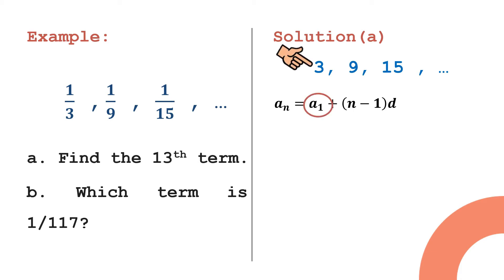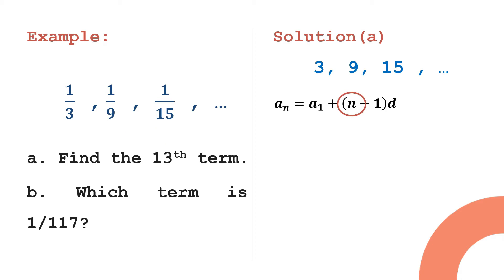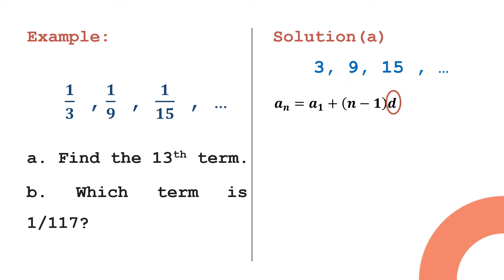We have the first term a₁ equal to 3, n equal to 13 because we're looking for the 13th term, and the common difference d. Subtracting consecutive terms: 9 minus 3 equals 6, and 15 minus 9 equals 6, so d equals 6.